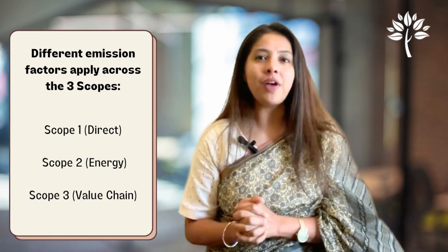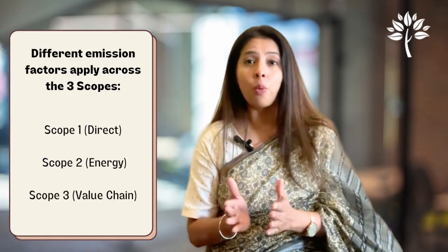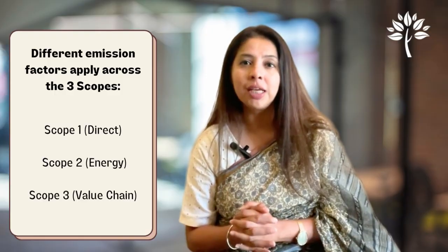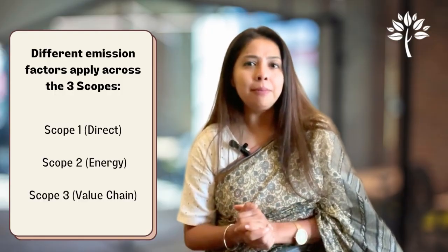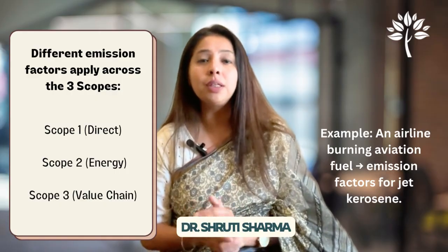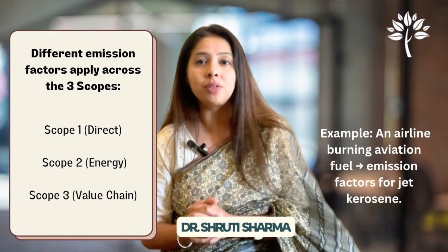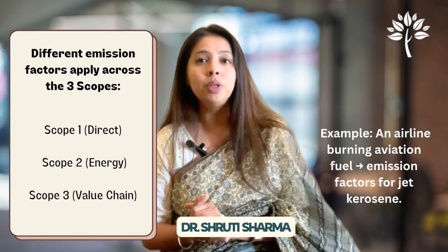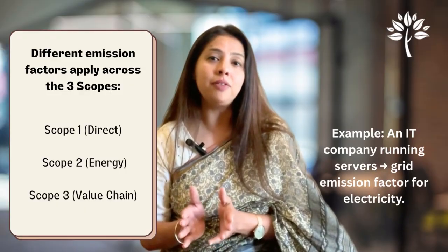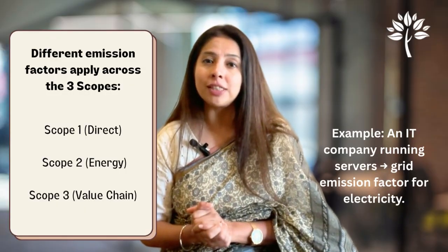Different emission factors apply across the three scopes. For Scope 1, which covers direct emissions, an airline burning aviation fuel can calculate emission factors for jet kerosene. For Scope 2, covering indirect emissions, an IT company running servers can refer to the grid emission factor for electricity.